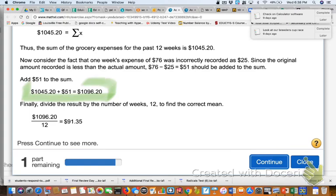So now, the real amount of money they spent on groceries all week long was $1,096.20. So now that they know the actual amount that they spent, they're going to take that new figure, divide it by the 12 weeks, and so they get the new correct average of $91.35.